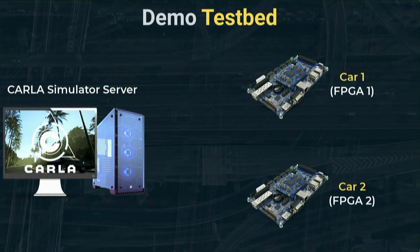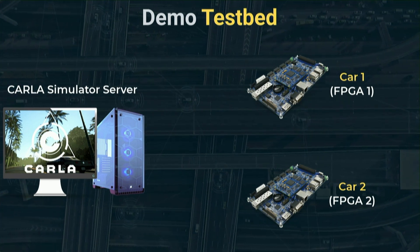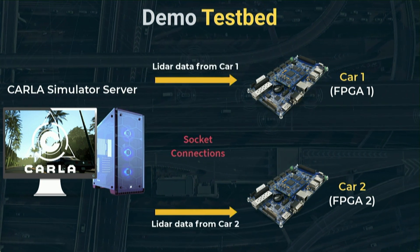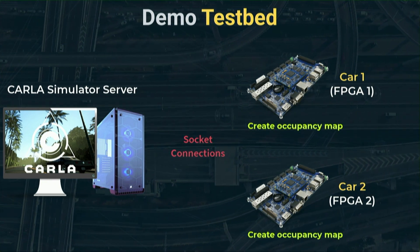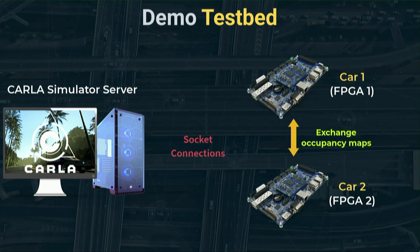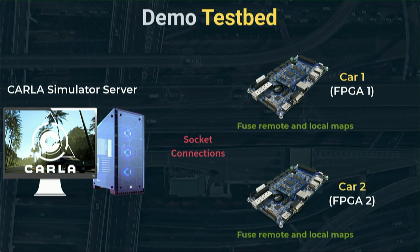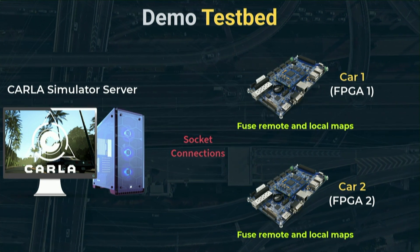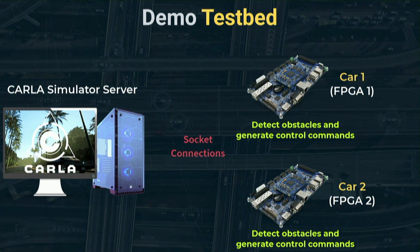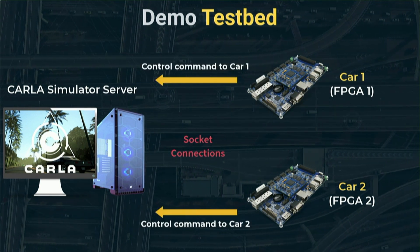We use a car simulator called CARLA to model two autonomous cars driving around a simulated real-world scenario. The two simulated cars communicate to the FPGAs through sockets. Each car's LiDAR data is passed to the FPGA to create local occupancy maps of the surroundings of the vehicle. The cars then exchange their occupancy maps through socket connections using vehicle-to-vehicle communication transceivers. Once the remote map is received and decoded, it is fused with the local map. The resulting fused map is then processed to decipher obstacles, which may be obstructed, and to generate proper control commands that can improve safety conditions, which are then sent back to the car simulator.